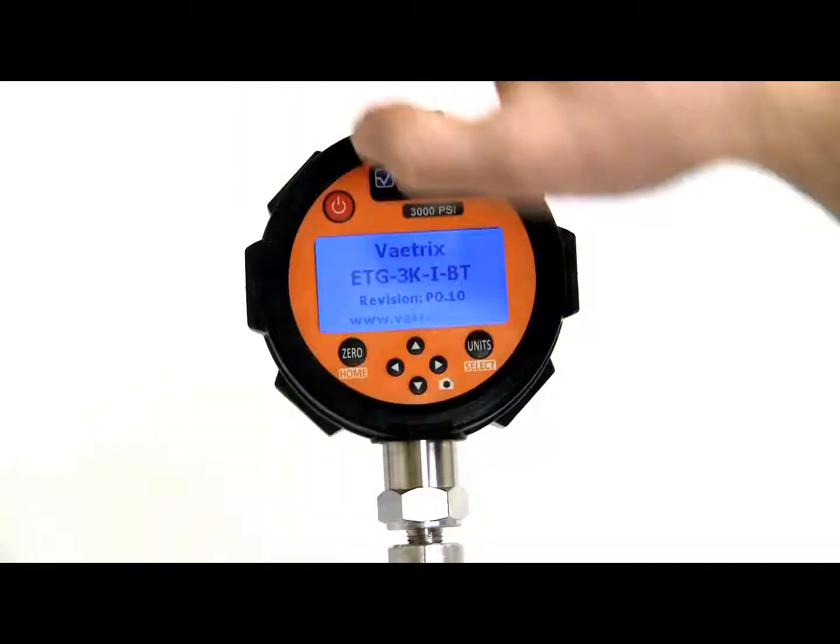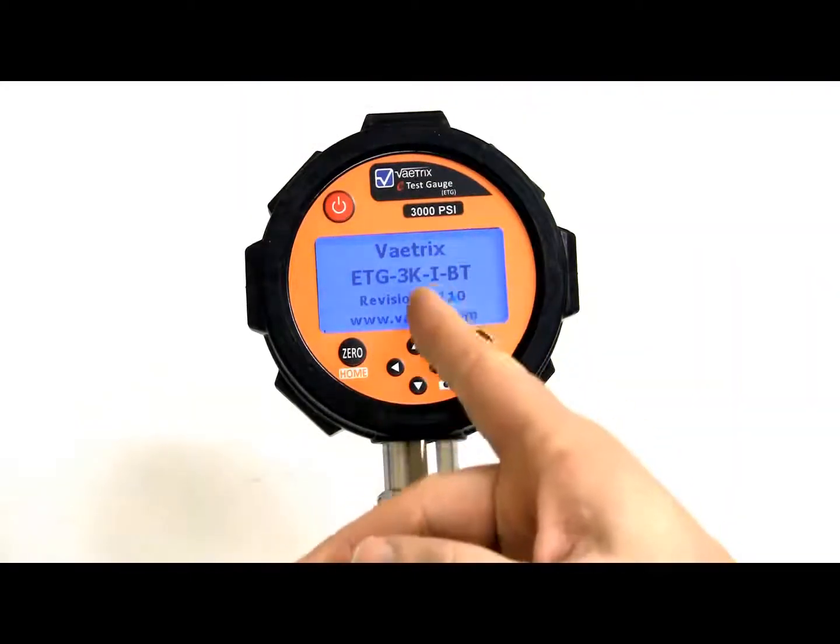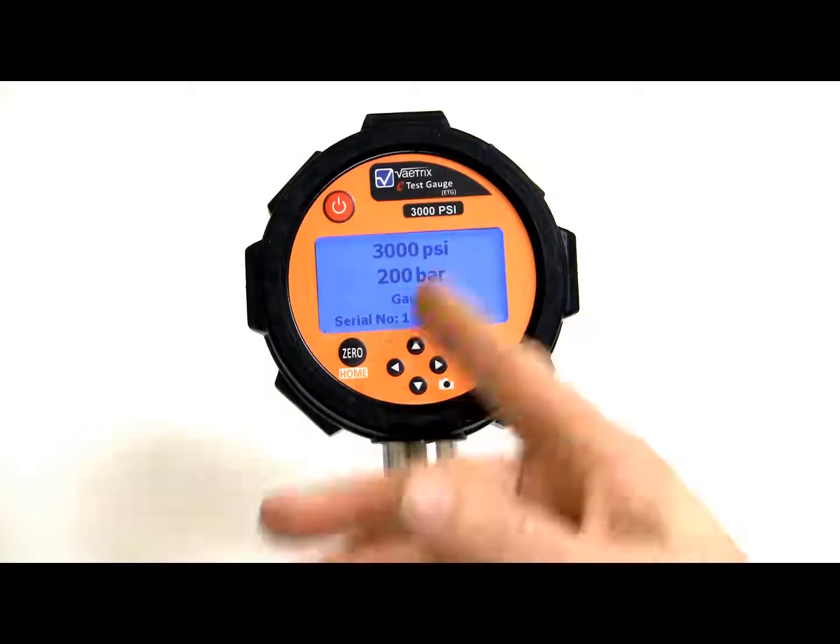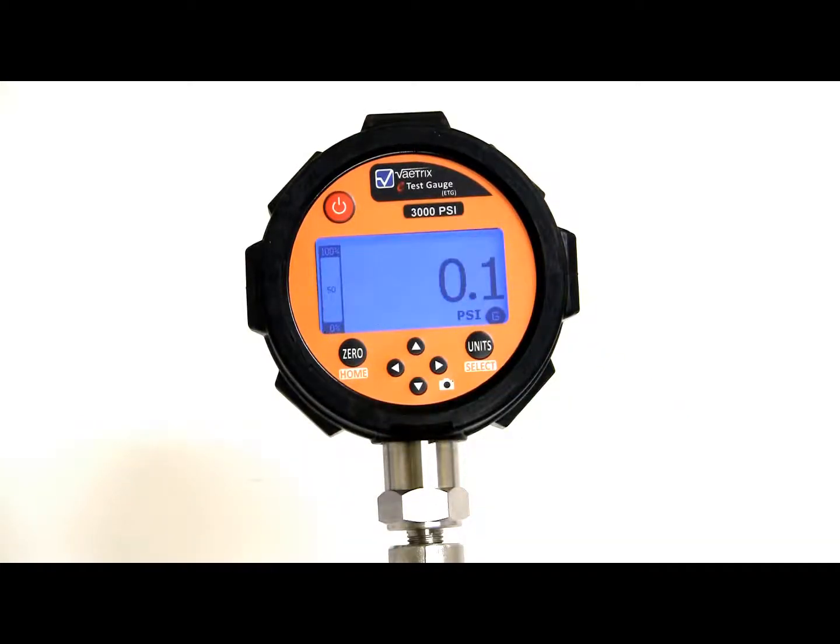To turn the unit on, press down and hold the power key. The unit will boot up and show you the model, revision, psi, bar value, and serial number.